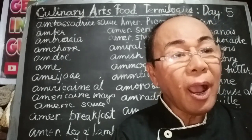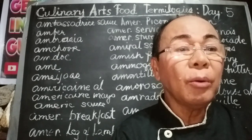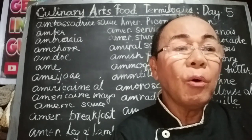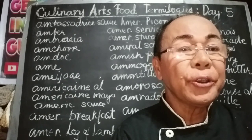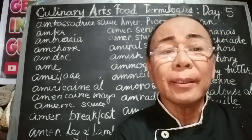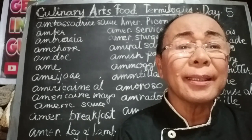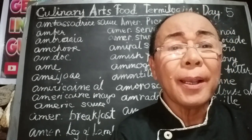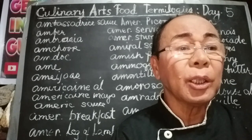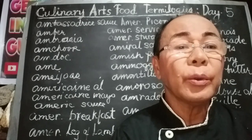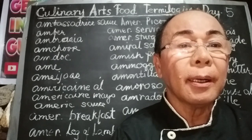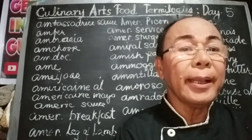Amêijoas or Portuguese pasta is a dish consisting of mussels cooked with garlic, cilantro, lemon juice, and pepper.